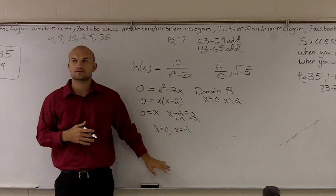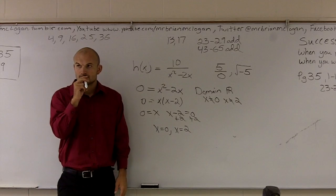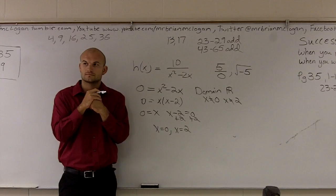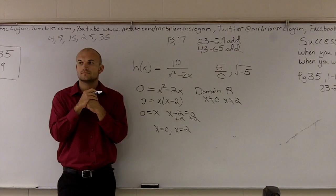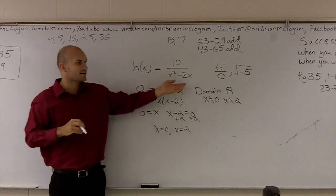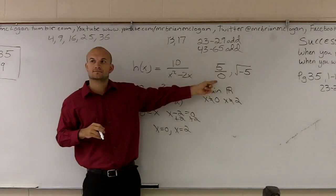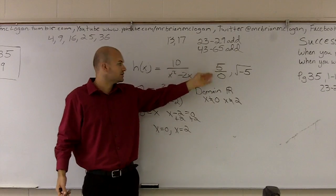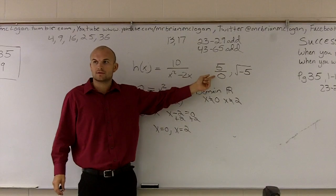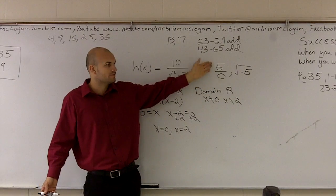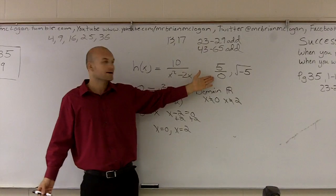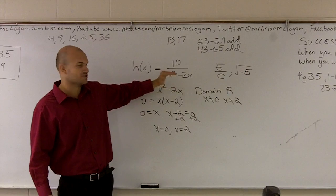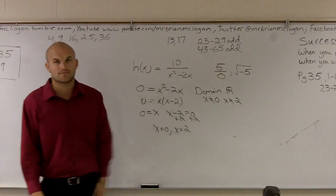Student: Is that the same with ones that do not have a fraction — like number 60, do I set that equal to zero? Teacher: What's on the bottom of number 60? Student: Nothing on the bottom. Teacher: Well, if there's nothing on the bottom, then this case doesn't apply. It's only when you have a rational expression that you worry about zero on the bottom. If there's nothing on the bottom, we don't care about dividing by zero. Just remember to set your bottom equal to zero and solve.